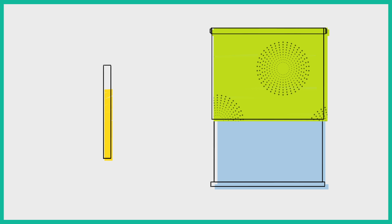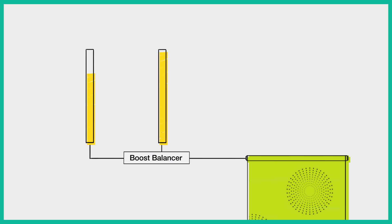First, add an additional battery pack. Second, use our boost balancer technology to balance the voltage between two packs. No two battery packs have identical voltage levels. The boost balancer draws power from one pack until the available power from both packs is equal.